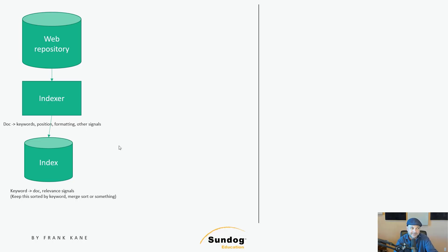How do we go about extracting keywords from documents? Do we just build up a map of every word in the document and go from there? There would be a whole world of complexity in normalizing those keywords. We need to deal with capitalization, punctuation, spacing, synonyms, and stop lists — that's probably just a start. We could also build up n-grams of words that represent phrases. I think generally these challenges are addressed in the process of building up a forward index that maps documents to keywords as an intermediate step, but I'm lumping all that into this more general indexer box.